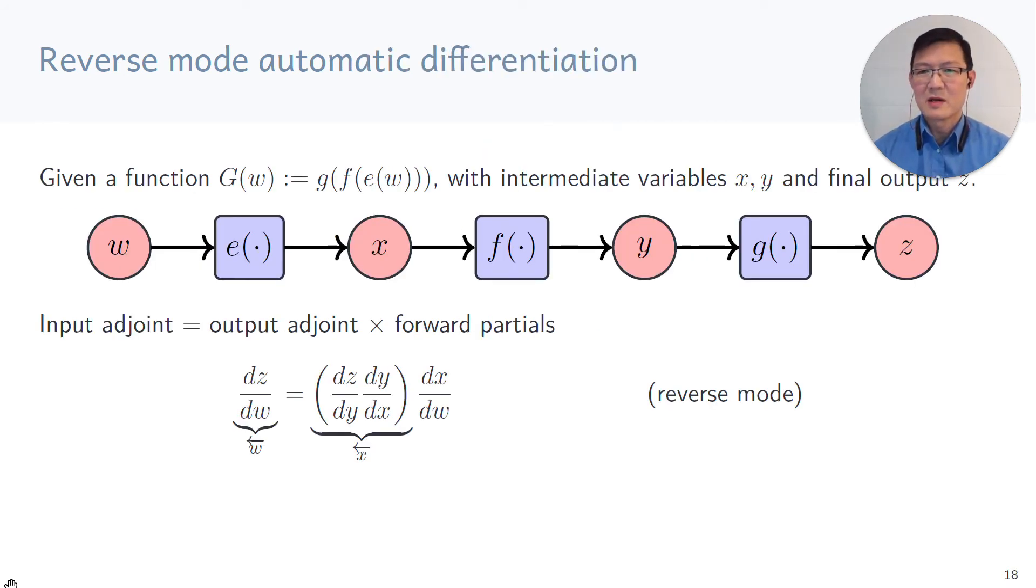Let's go back to our function big G, which is a composition of three functions E, F and G. For reverse mode automatic differentiation, we bracket the first two terms. We can identify that the term on the left hand side of the equation is actually the gradient with respect to W, which we can denote as the adjoint of W. And the term inside the bracket is the gradient of the output variable Z with respect to X, and we can write this down as the adjoint of X. Hence, the reverse mode automatic differentiation rule can be thought of as the input adjoint is just the output adjoint multiplied by the partial that takes you between these two variables X and W.